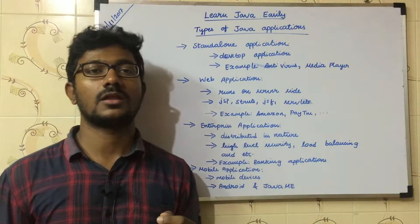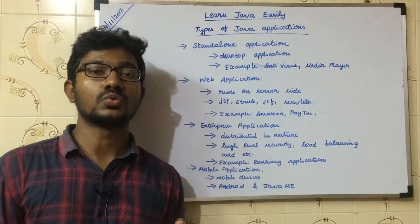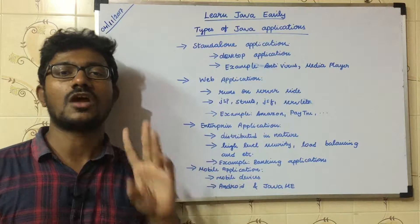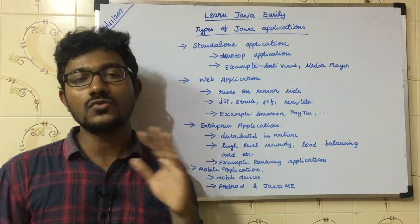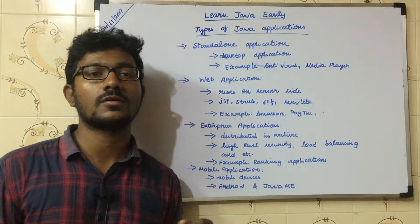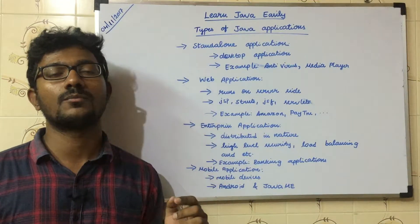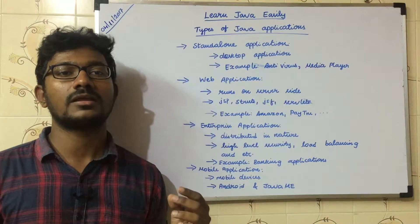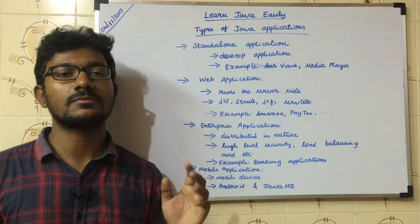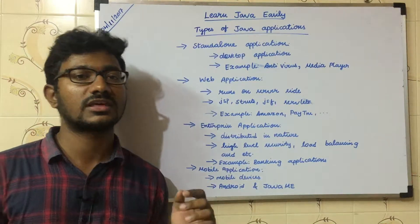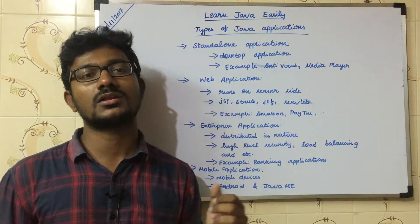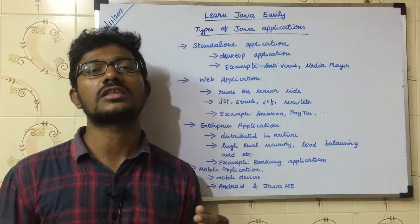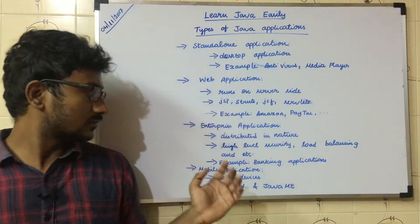The fourth type is the mobile application. You may already know about this. A few years back, most of you would have bought a Java mobile — a keypad phone — and used it to play Java games.